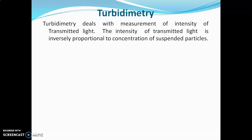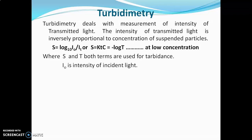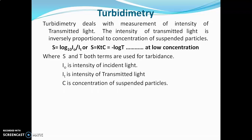Turbidometry deals with measurement of the intensity of transmitted light. The intensity of transmitted light is inversely proportional to the concentration of suspended particles. At low concentration, this technique follows Beer-Lambert's law, and the equation is: S = log₁₀(I₀/Iₜ), or S = KTC = −log T. This equation is for low concentration solutions, where S and T are both terms used for turbidity. I₀ is the intensity of incident light, Iₜ is the intensity of transmitted light, C is the concentration of suspended particles, and K is the constant.